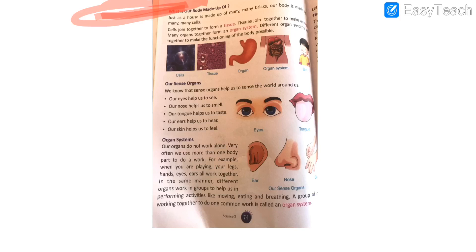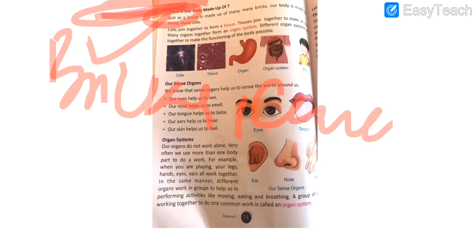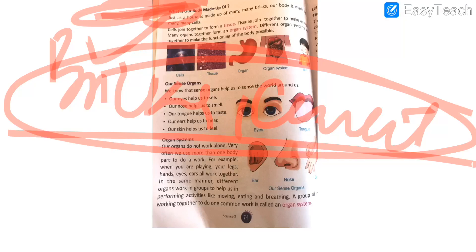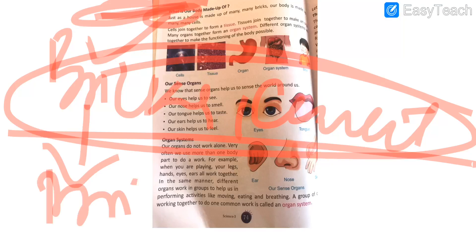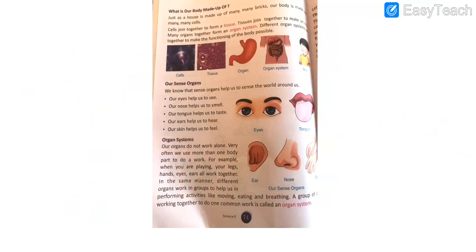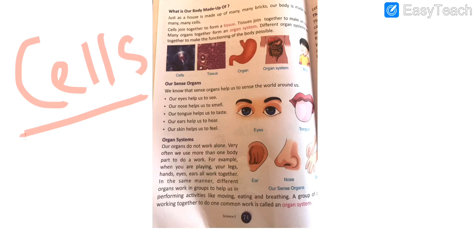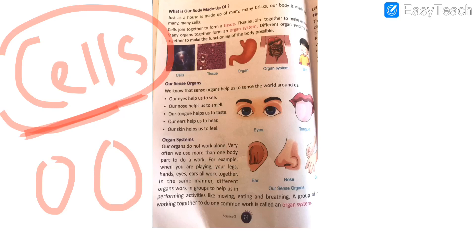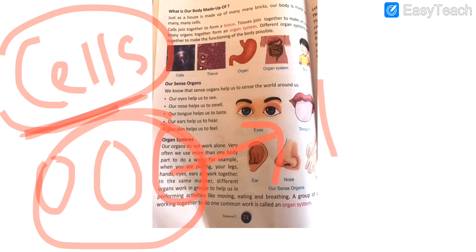Now we will see what our body is made up of. Just like our house is made up of many materials like bricks and cement, but the basic material our house is made up of is bricks — similarly, our body is made up of basic units called cells. When one cell joins with another cell, and cells join together, they form a tissue.